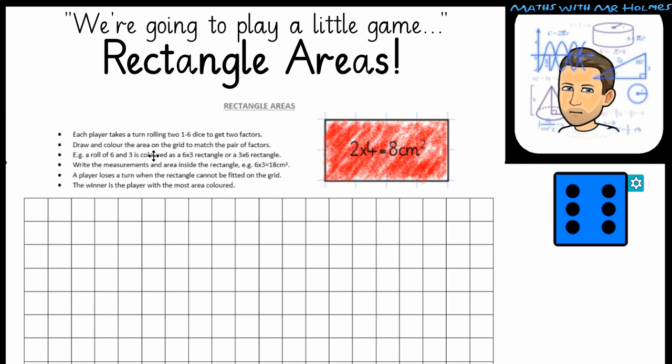So we're going to draw and colour the area on the grid to match those factors. For example, if I rolled a 6 and a 3, I could draw a 6 by 3 rectangle or a 3 by 6 rectangle. Unfortunately, mine wasn't as good. I only got a 1 and a 6.